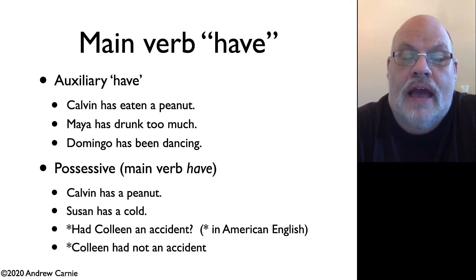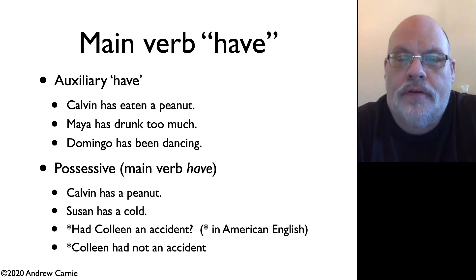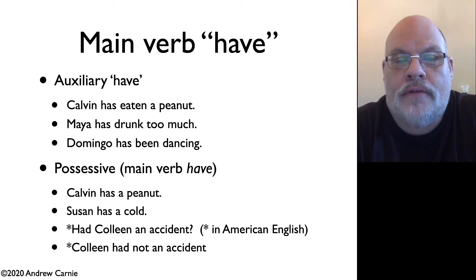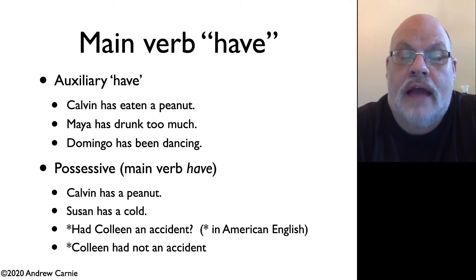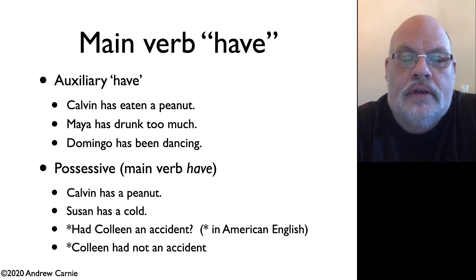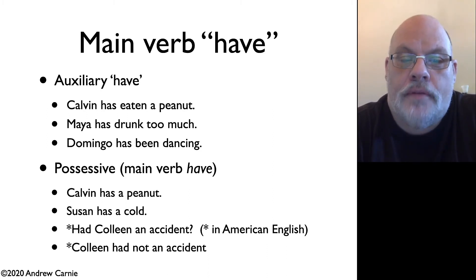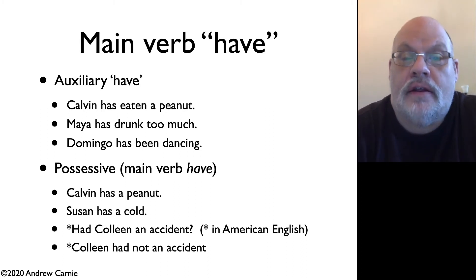You can't say 'Had Colleen an accident,' although in British English that might be okay. Similarly, you cannot put a not after main verb have — you can't say 'Colleen had not an accident.' The ungrammaticality of these sentences, at least in American English, shows us that main verb have is not an auxiliary; it's a verb itself.